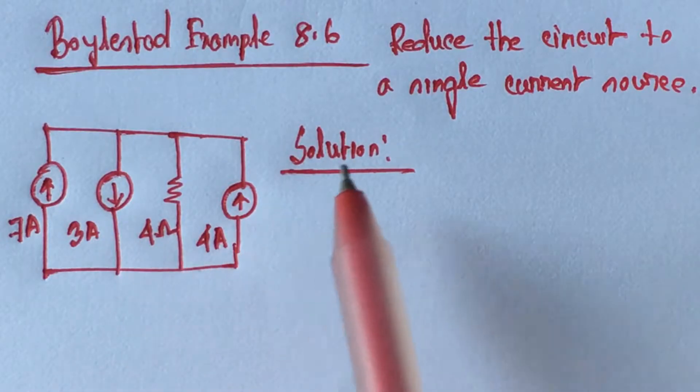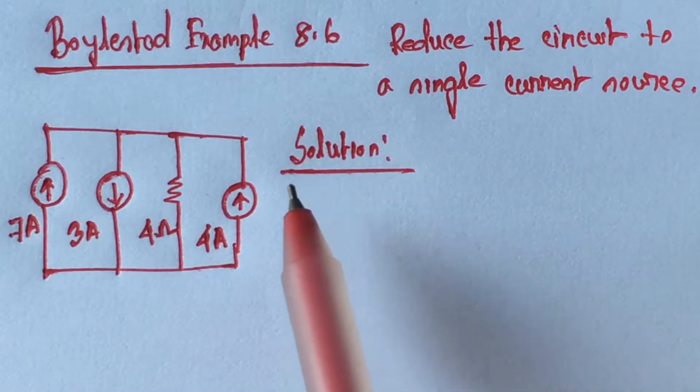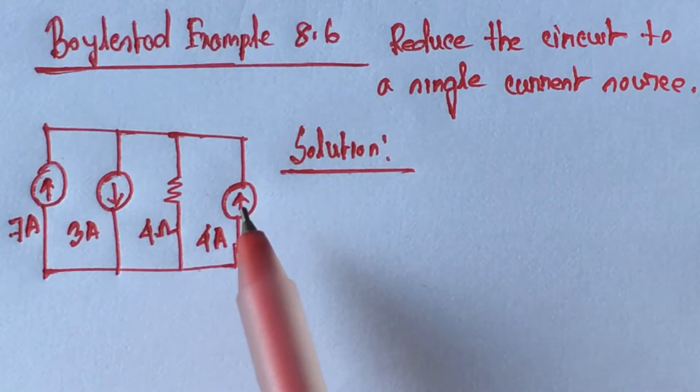We know that current sources will be added simply if the direction of current sources are same and if the direction of current sources are not same then this will be subtracted.